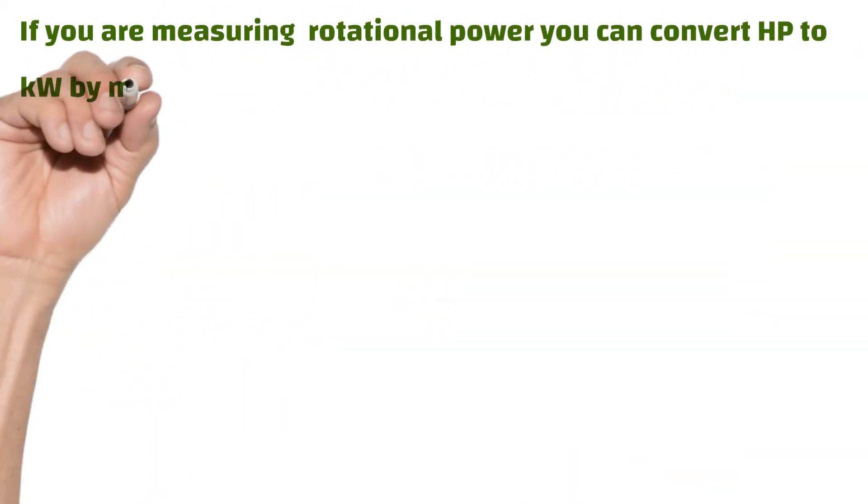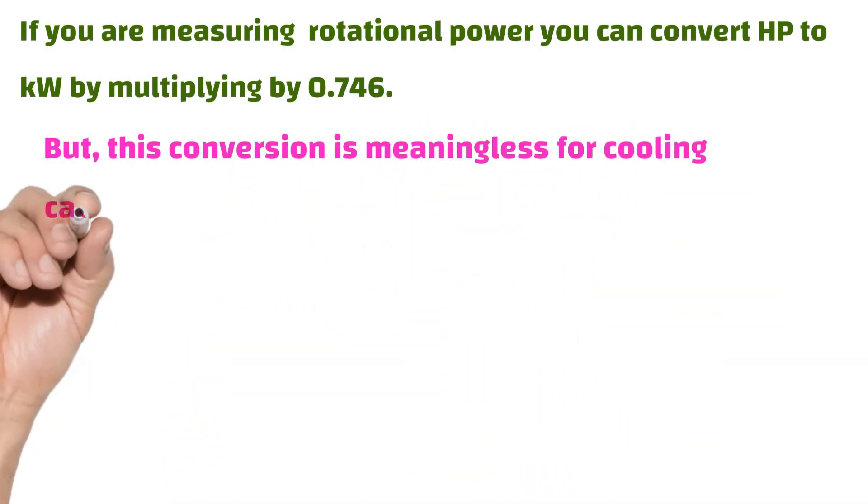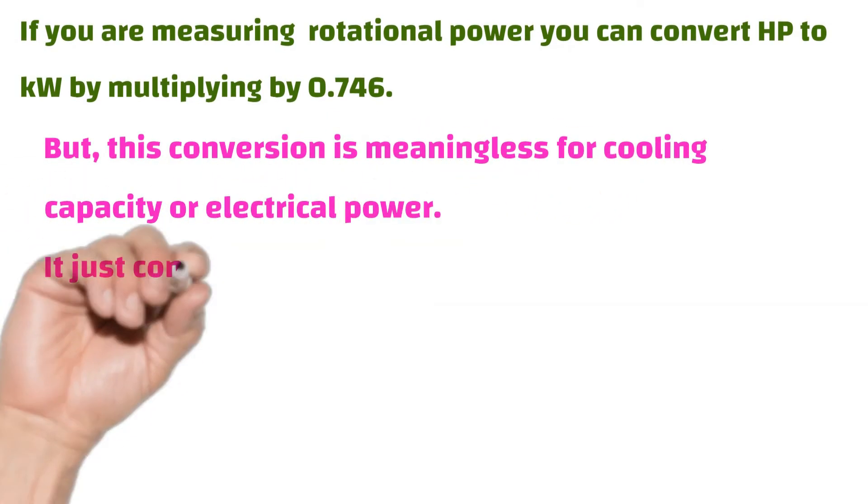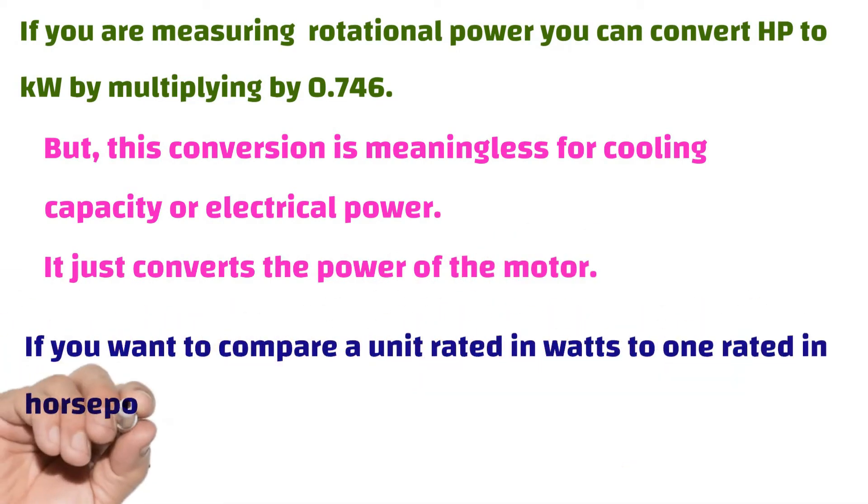If you are measuring rotational power, you can convert horsepower to kilowatts by multiplying by 0.746. But this conversion is meaningless for cooling capacity or electrical power. It just converts the power of the motor.